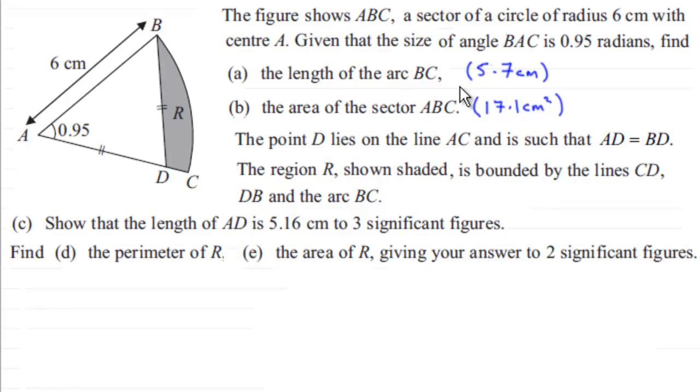I'll also have updated the length of the arc BC we found in part A is 5.7 cm. And also in part B the area of the sector ABC that was 17.1 cm². So if you haven't tried this yet and you want to give it a go, as usual I'll give you just a moment or two to pause the video.